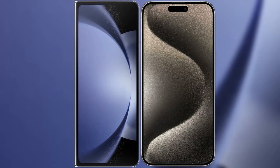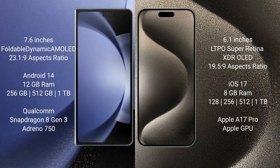I will compare the new Samsung Galaxy Z Fold 6 with iPhone 15 Pro. Samsung Galaxy Z Fold 6 comes with a 7.6-inch foldable dynamic AMOLED display with an aspect ratio of 26.1:9. iPhone 15 Pro has a 6.1-inch LTPO Super Retina XDR OLED display with an aspect ratio of 19.5:9.